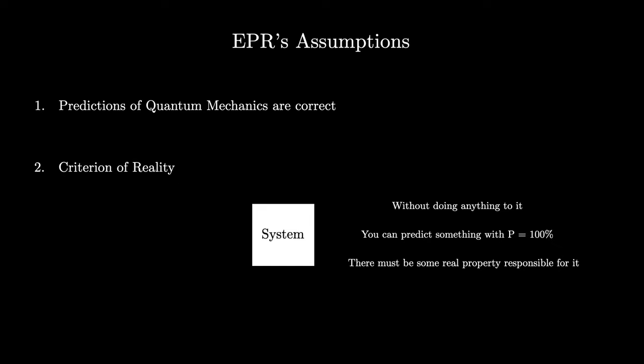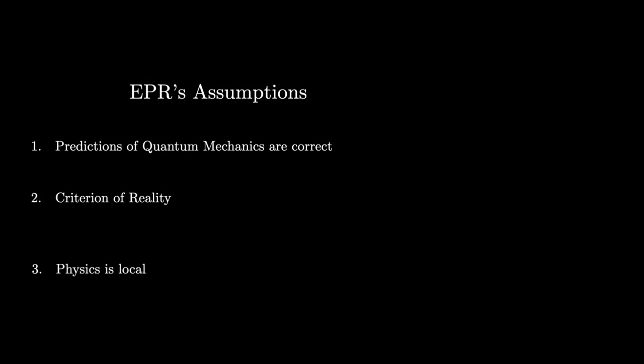Let's now consider their final assumption. The third and final assumption they make is that physics is local. This means that experiments carried out on a system in one region of space should not in any way disturb the state of a system that exists in a far away region in space. This one is a quite natural assumption to make and we will see that it's incredibly important as it will also play a key role in helping us understand the significance of Bell's theorem. So those are the three foundational assumptions of the EPR argument.